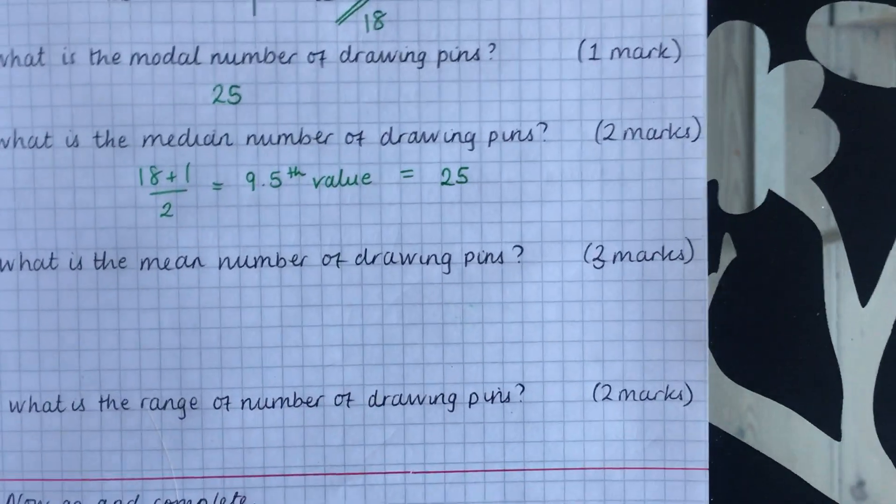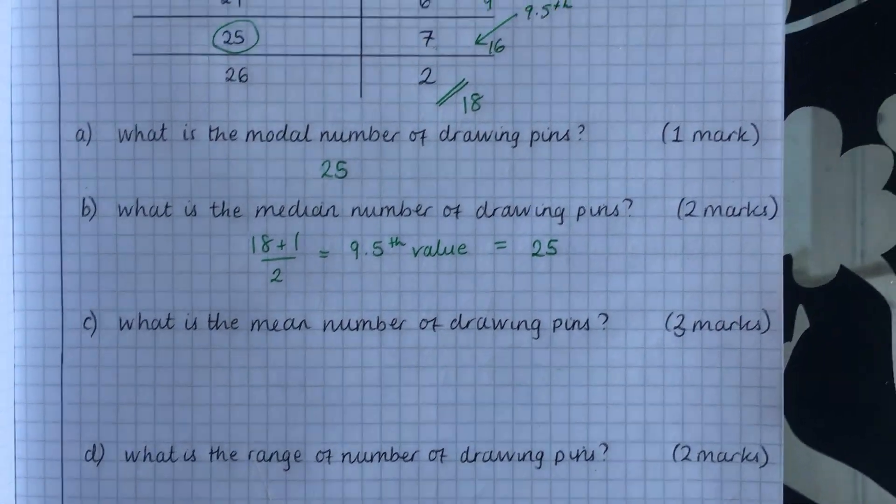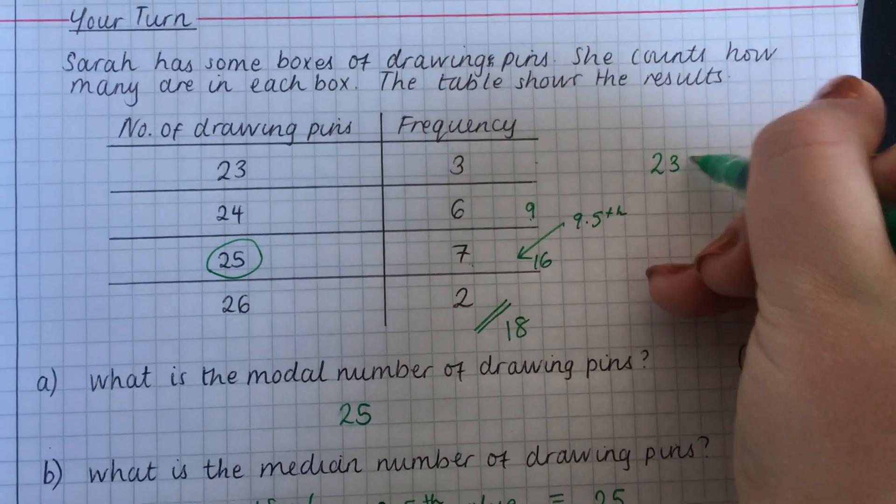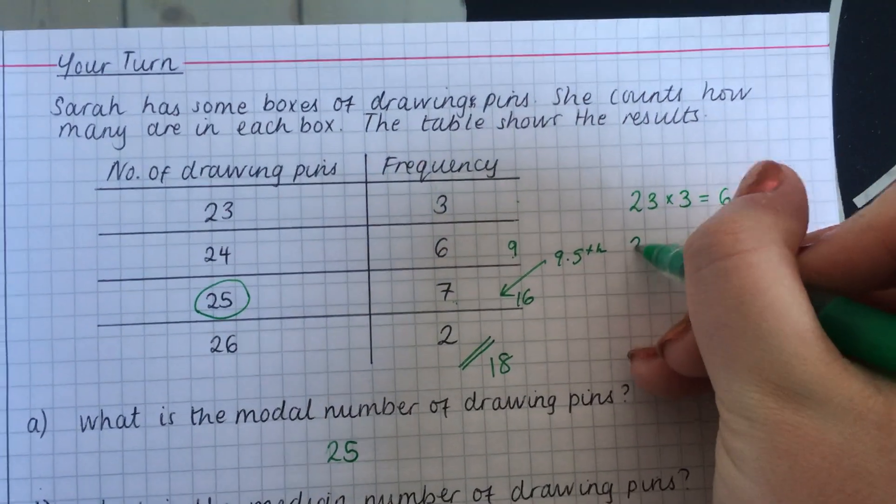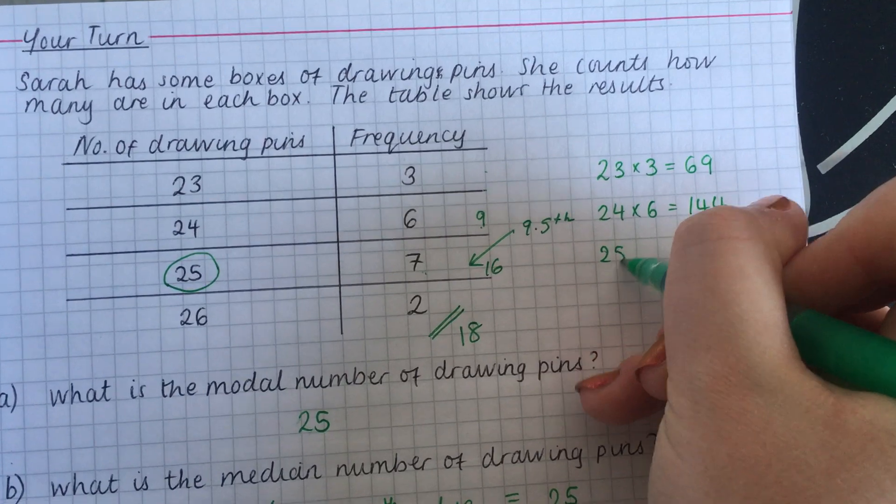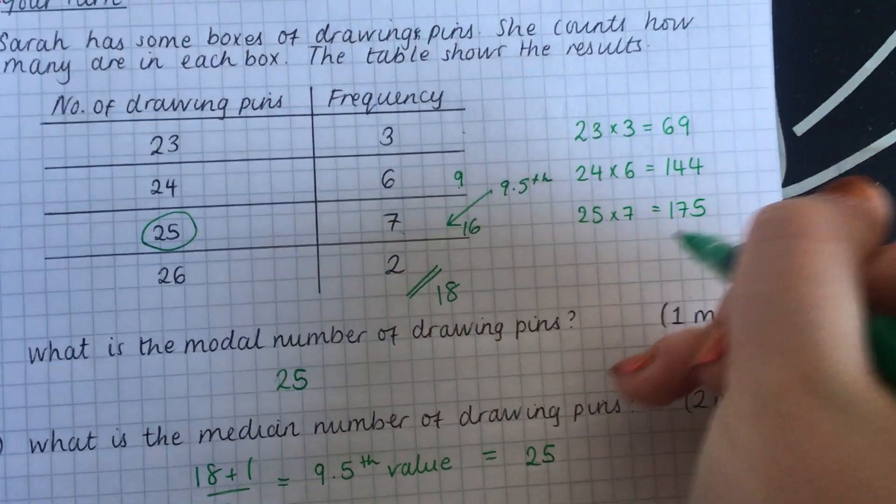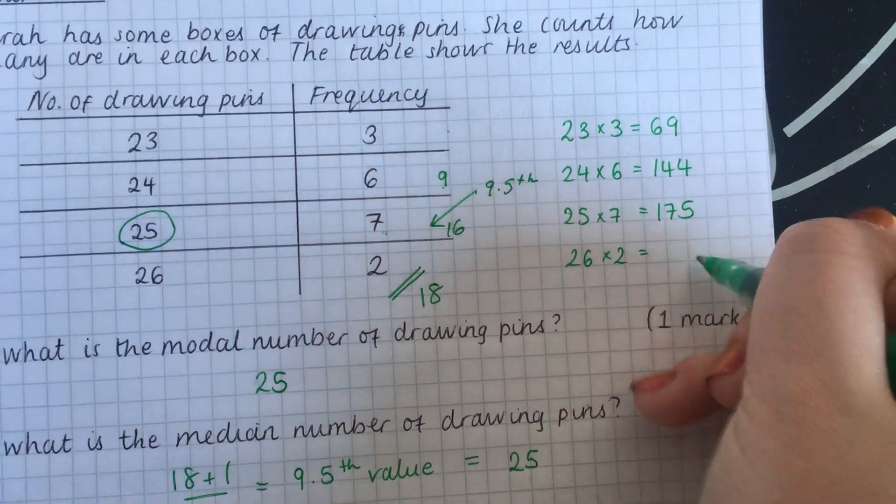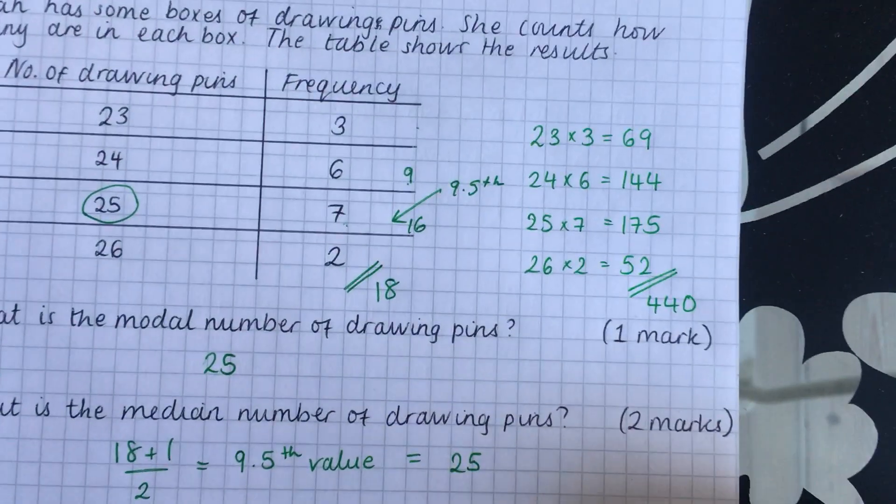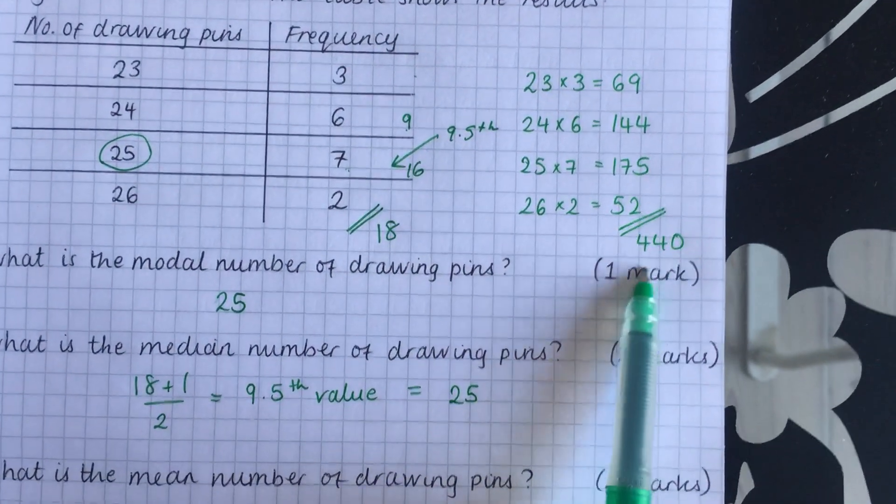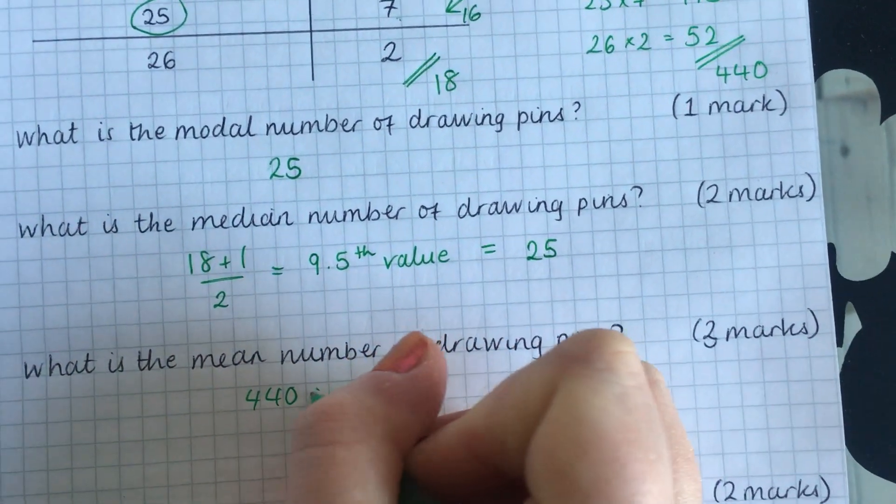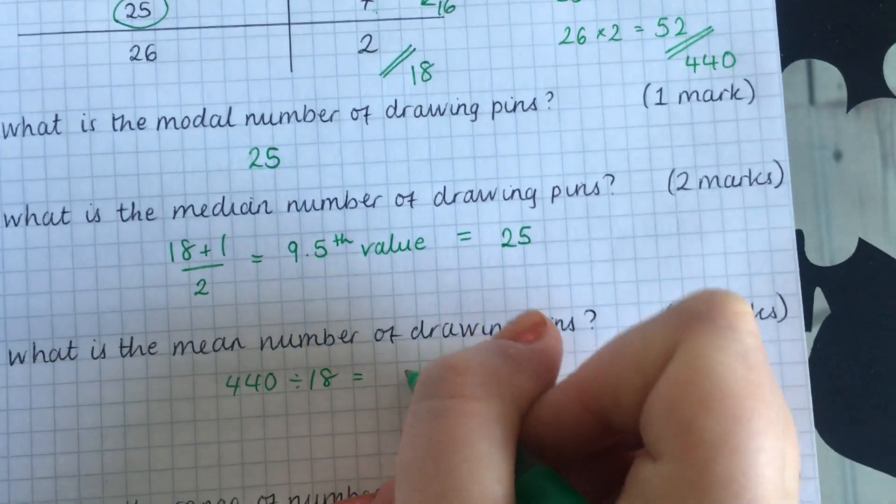Now, the mean number of drawing pins. The first thing we have to do is multiply our number of drawing pins by the frequency. So we're doing 23 times 3 is 69. 24 times 6 is 144. 25 times 7 is 175. And 26 times 2 is 52. Now, when you add those all together, you get 440. And our final stage is to do 440, because that's all the numbers added up, divided by how many there are. So 440 divided by 18 gives you 24.4.